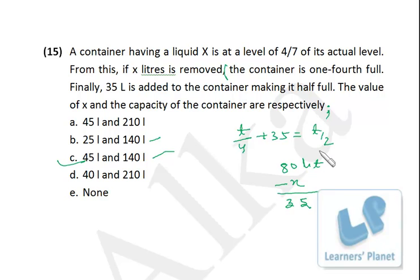Now we just go over here: the container initially is 4 by 7 of 140, that means 80 liters. Now from this 80 liters, if we remove X, then the container is one-fourth full. From this, if X liters is removed, the container is one-fourth full. So what is one-fourth of 140? That is 35. So from 80, if we remove X, we are left with 35, so X should be 45. Pretty simple. I hope you are clear.